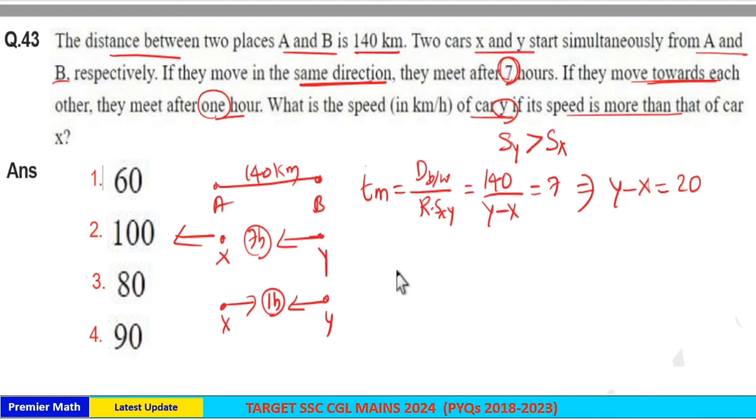In that case, time of meet equals 1 hour, which equals 140 divided by the relative speed. Since they're moving in opposite directions, the relative speed is Y plus X. From this, Y plus X equals 140.